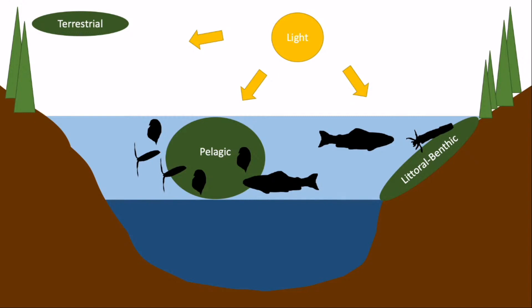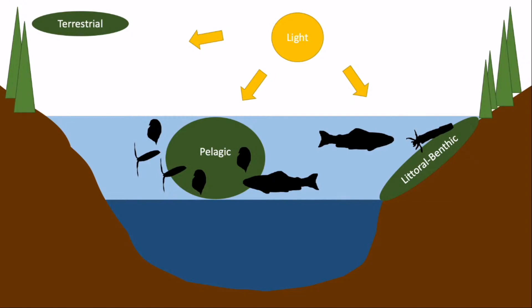Research demonstrates that aquatic consumers' reliance on basal resources from these three habitats fluctuates widely.